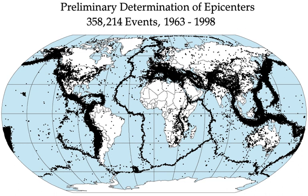An earthquake is the shaking of the surface of the Earth, resulting from the sudden release of energy in the Earth's lithosphere that creates seismic waves. Earthquakes can range in size from those that are so weak that they cannot be felt to those violent enough to toss people around and destroy whole cities. The seismicity, or seismic activity, of an area is the frequency, type and size of earthquakes experienced over a period of time.